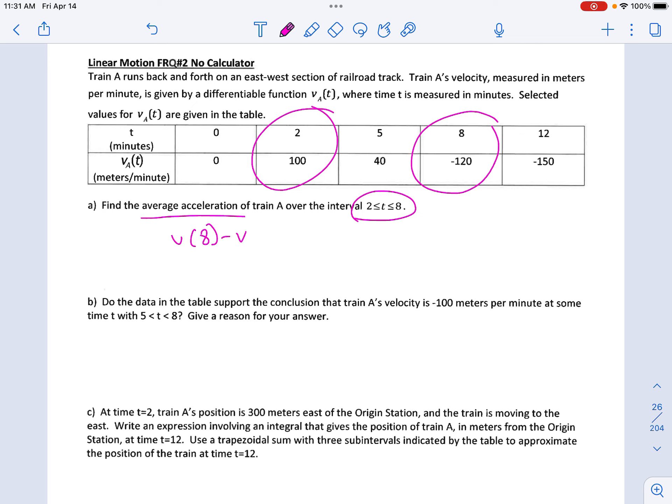So I want to find V of 8 minus V of 2 over 8 minus 2, and these numbers are negative 120 minus 100 over 6. And I'm going to just clean this up. So the answer would be meters per minute, but then you're dividing by minute again, so it should be minutes squared. It makes sense for acceleration. Those are my units.